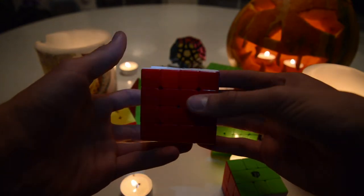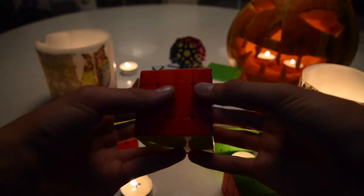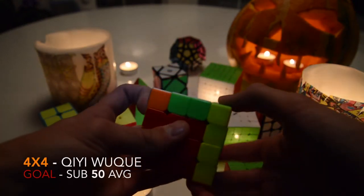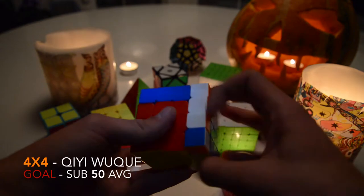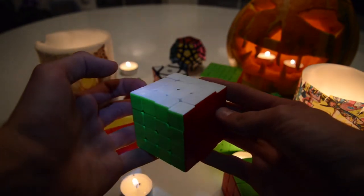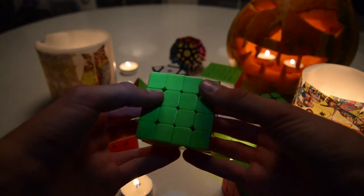Next up it's 4x4 and I will be using the Qi Wuchui stickless 4x4. My goal yet again is sub 50 average. I really want sub 50 average because I think that is going to look really cool in my WCA page.